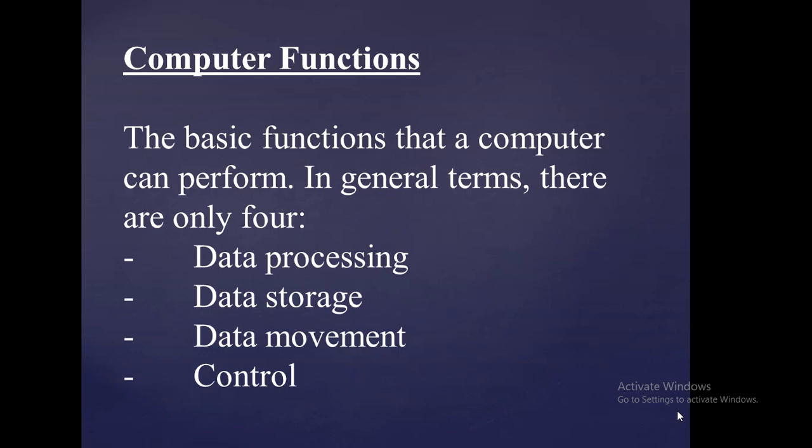The computer must be able to move data between itself and the outside world. When we talk about the outside world, we bring the element of the liveware or the humans. The computer's operating environment consists of devices that serve as either the sources or destination of data. When data is received from a device that is directly connected to a computer, the process is basically referred to as input output. We have either the data being inputted or being produced out, which is the output. The abbreviation I/O means the input output. These devices are also referred to as the peripheral devices.